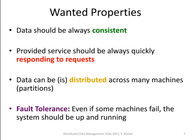If we have a wish list for a system, first: data should be consistent. Consistency here is not the same as in ACID — here we're talking about replicated data being in a consistent state. Whenever you write something to the system and someone else reads that value, they should get a consistent view. This is the ideal scenario. The other thing we want is that the system responds very quickly to requests — Amazon loses big money if the system is not replying immediately.